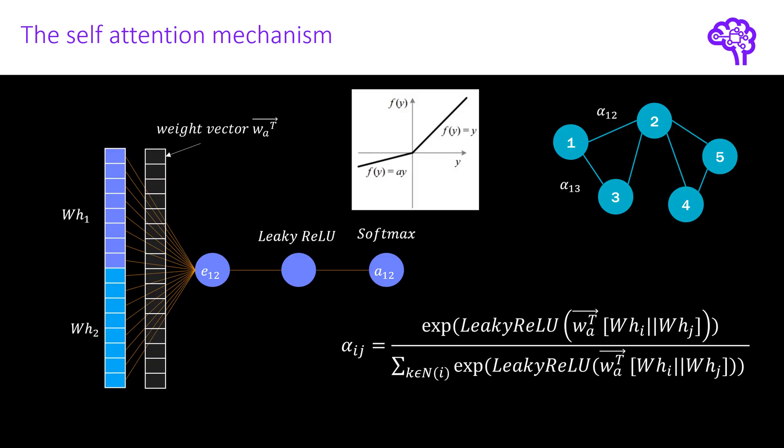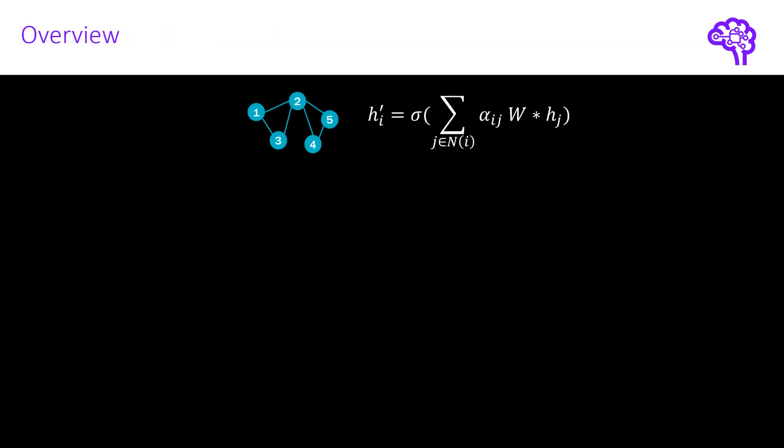So now we know what the attention coefficients are and how to calculate them. But how do we include them in a graph neural network layer? The way how this is done is simply by multiplying each of the neighbor states with the corresponding attention coefficient for that edge. This can be seen as a linear combination of node feature vectors, weighted with the importance for each node. As a result, the important elements are amplified and the less important ones are suppressed.